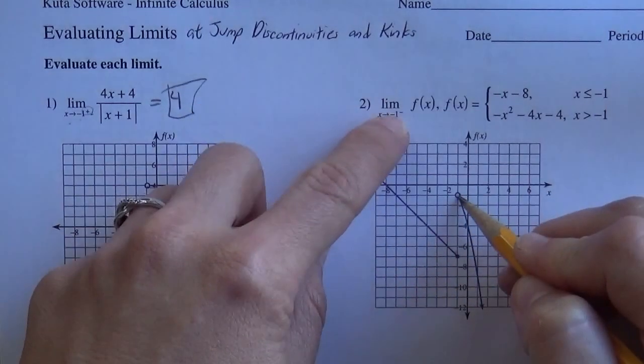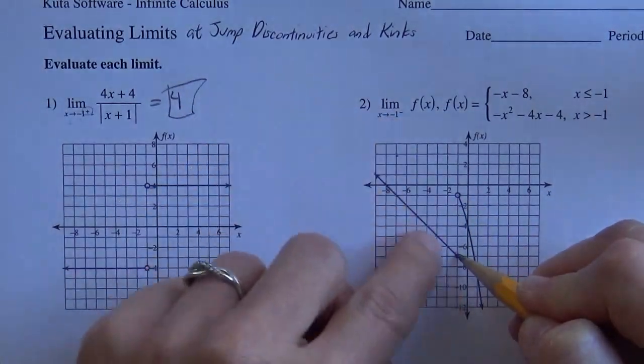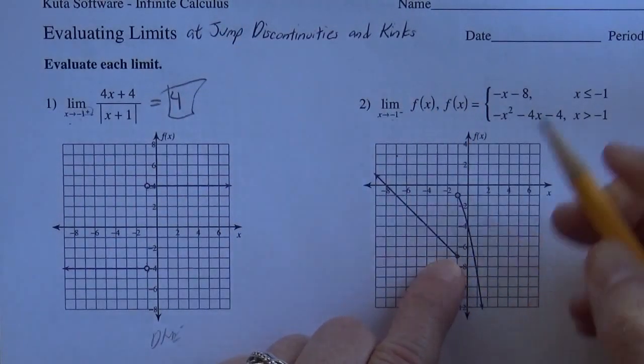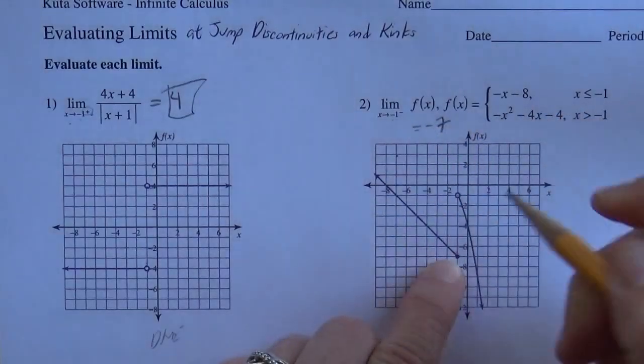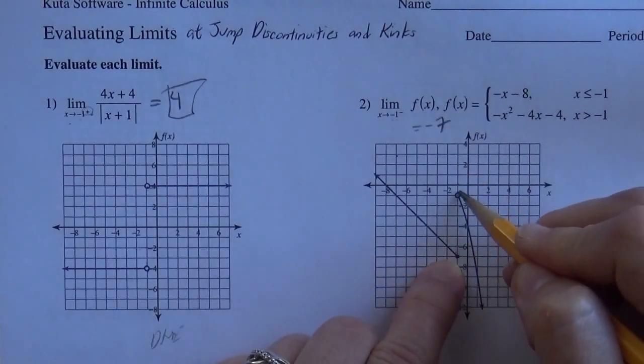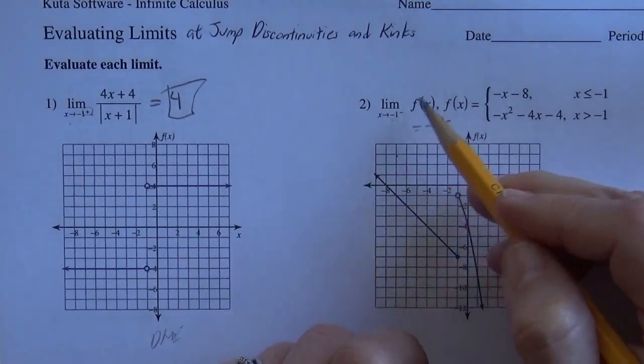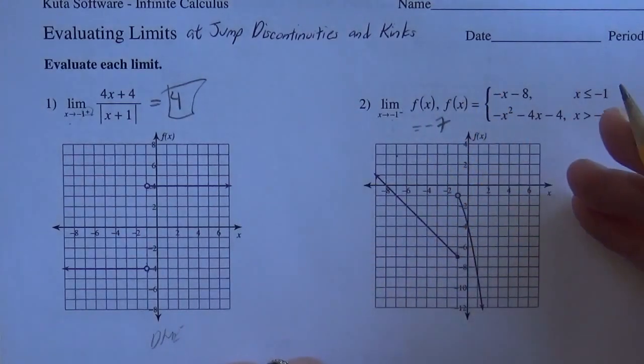So here we're coming from the left side. From the left side, coming from this side, we're going down to this one. And so that's going to be a negative 7. And if it had been coming from the right, it would have been a negative 1. And if it didn't say anything, you would say it doesn't exist.